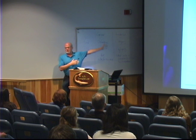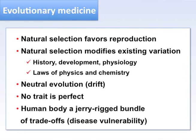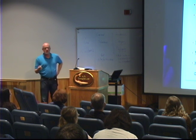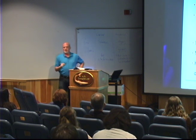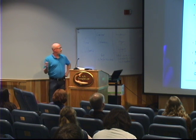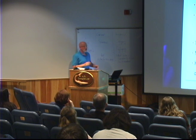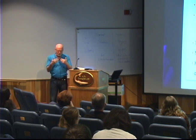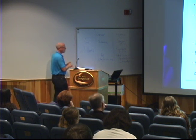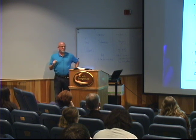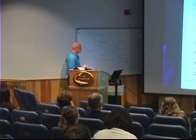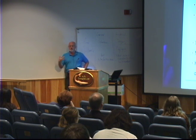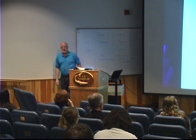The application of evolutionary principles to understanding human health and disease comprises the exciting field of evolutionary medicine. Evolutionary biology teaches physicians that natural selection does not favor health, happiness, or longevity, but rather reproductive success. Natural selection can only modify variation that exists in the population, constrained by developmental history, physiology, and the laws of physics and chemistry. Not all differences in DNA frequency result from natural selection providing a reproductive fitness advantage — some arise from drift. No trait is perfect; making one trait better will make another worse, giving us the central tenet that the human body is a jerry-rigged bundle of trade-offs.